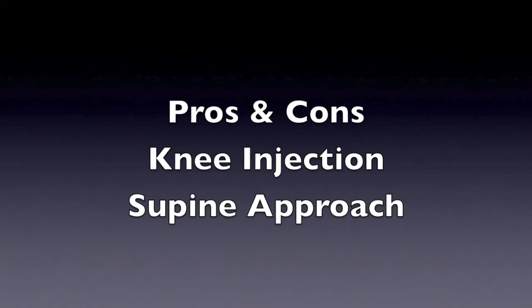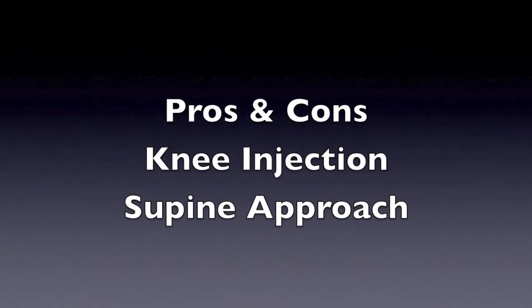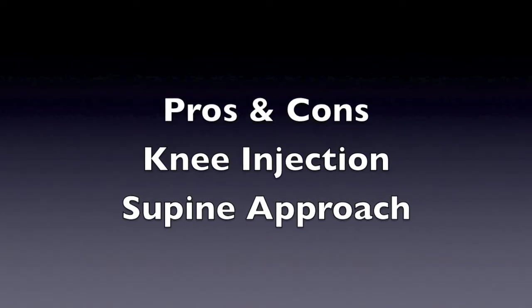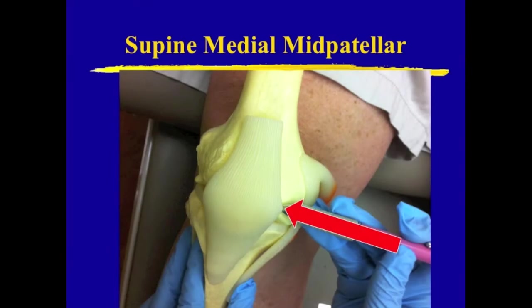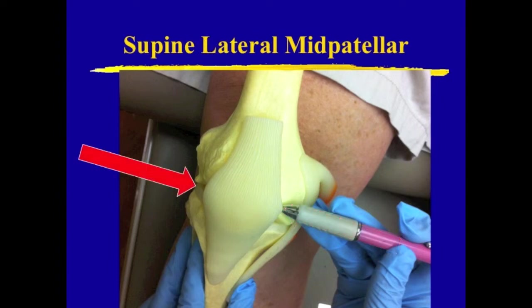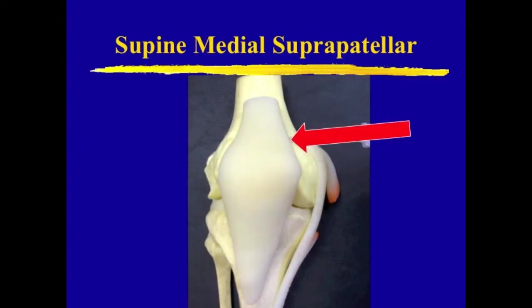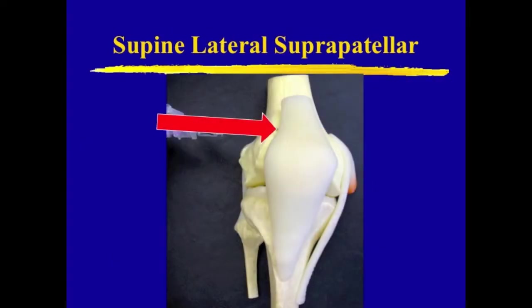Now we can move to evaluate the pros and cons for a knee injection in the supine position. Essentially, there are four choices for a supine injection: the medial midpatellar approach, lateral midpatellar, medial suprapatellar, or the lateral suprapatellar approach.